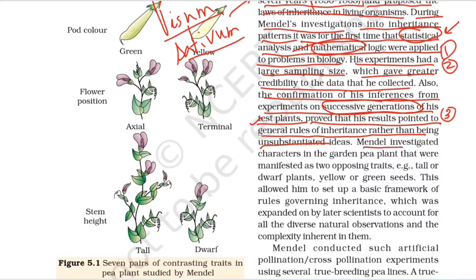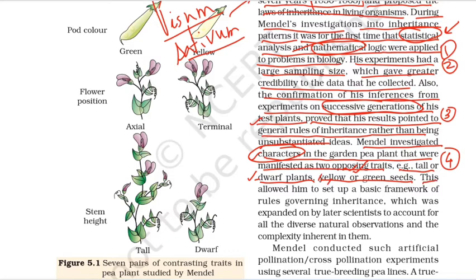He studied characters in the garden pea that were manifested as two opposing traits. For example, characters such as seed color — yellow or green, seed shape, and others. This allowed him to set up a basic framework of rules governing inheritance, which was expounded on by later scientists to account for all the diverse natural observations and the complexity inherent in them.